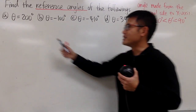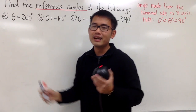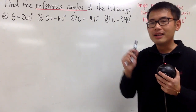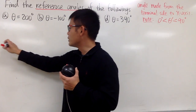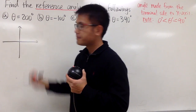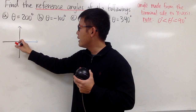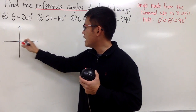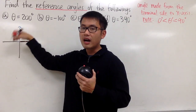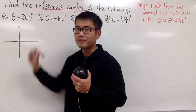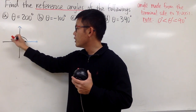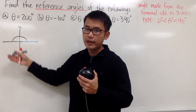Let's start with the first one: θ is equal to 200 degrees. To do these kinds of questions, draw a picture — the picture helps so much. Start with the x-axis and the y-axis. This is a positive angle, so we are always going to start with the positive x-axis first. Because you have a positive angle, you rotate counterclockwise. From here to here, that's 180 degrees.